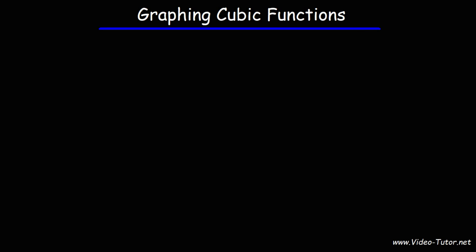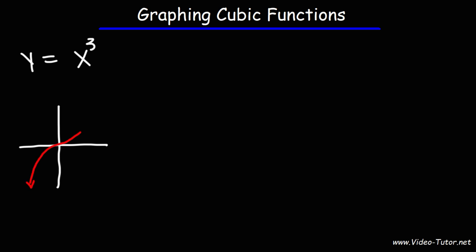In this video, we're going to talk about how to graph cubic functions using transformations. Let's start with the parent function y is equal to x cubed. The general shape of that graph looks something like this. This function is always increasing for all x values — as you move from left to right, as x increases, y increases.